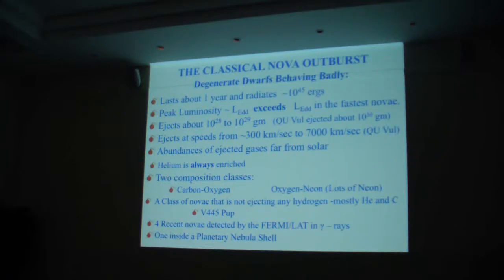Four of the recent novae have been detected by the Fermi Large Area Telescope in gamma rays. One, we were in two this morning. One inside a planetary nebula shell. I will immediately object to Big Al over here. These were the one-off objects. I think we have some calculations that directly relate to that.